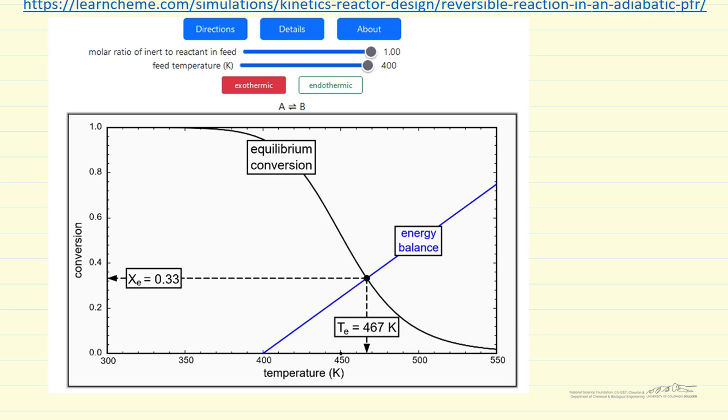The black line represents equilibrium conversion. So for an exothermic reaction, as we raise the temperature, equilibrium conversion decreases. If we ran an adiabatic reactor to equilibrium, then this point, the intersection of these two curves, corresponds to the equilibrium conversion and equilibrium temperature, which are shown by these values.